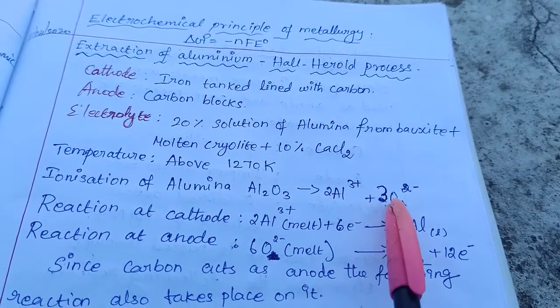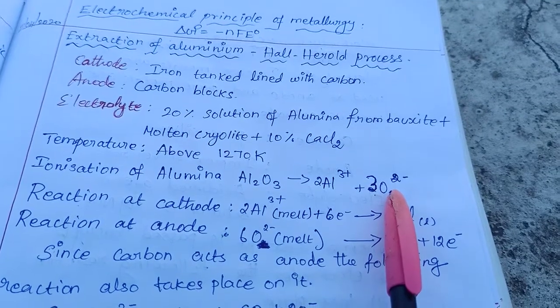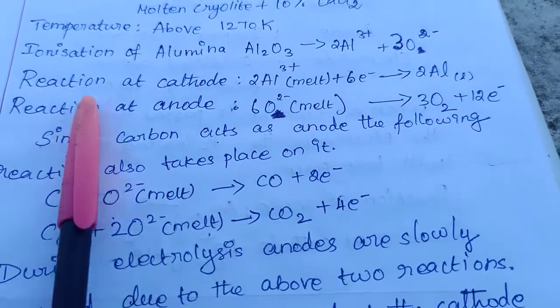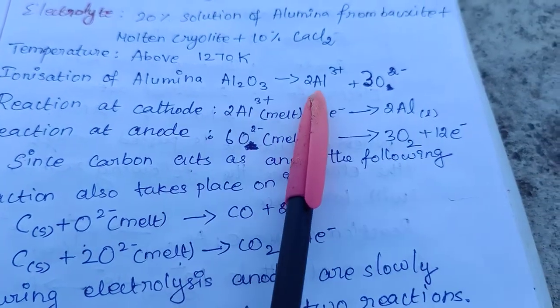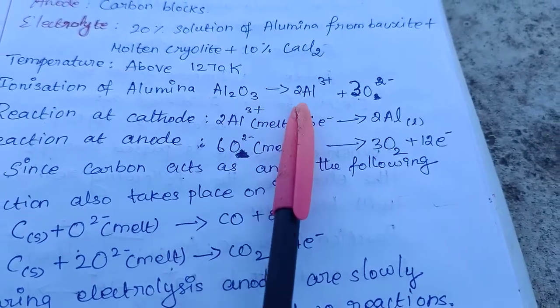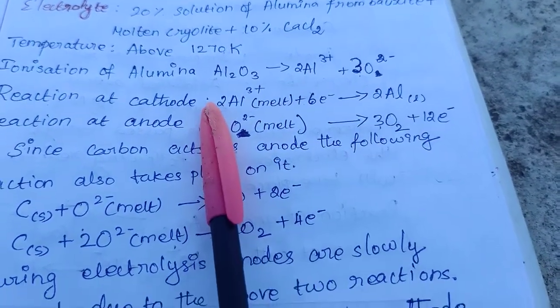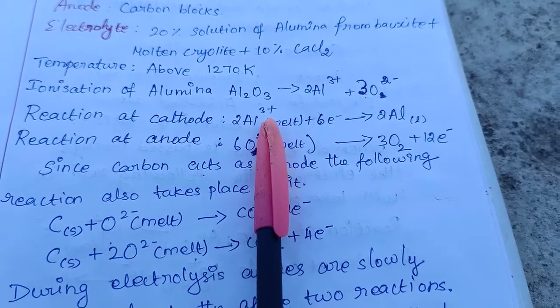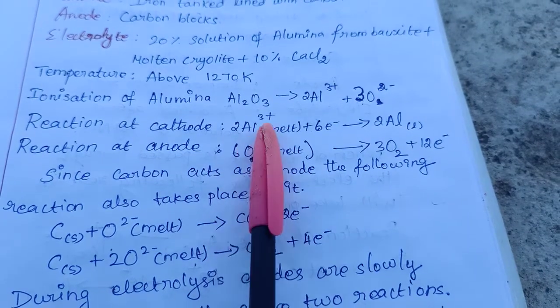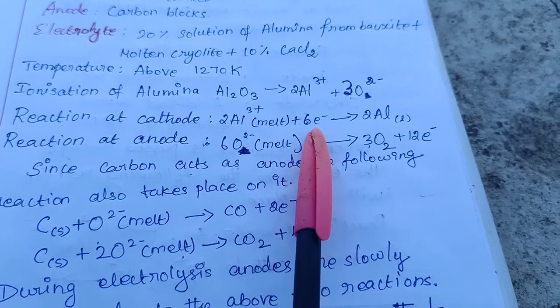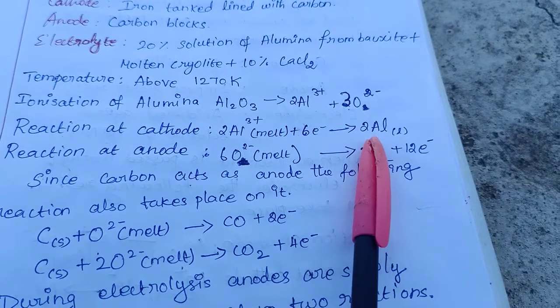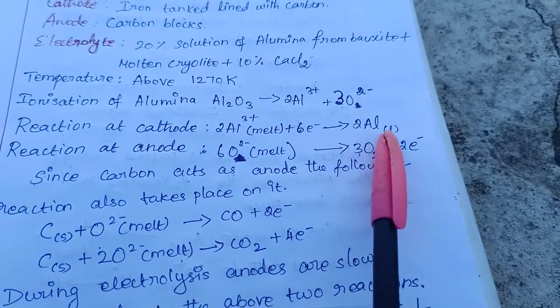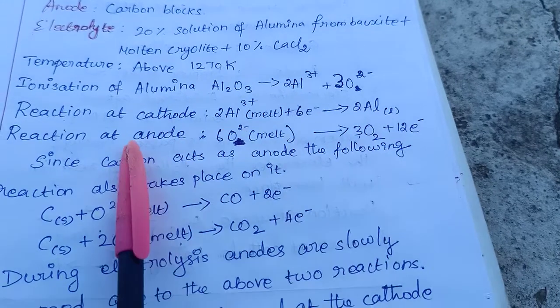The reaction at the cathode: aluminum Al³⁺ ions gain electrons. 2Al³⁺ + 6e⁻ → 2Al in liquid state. Pure aluminum forms at the cathode in the liquid state.